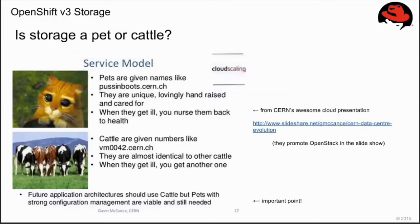Is something as unique and as important as your data the pet or cattle? This is a slide from a presentation out of CERN, where they're using cloud platforms to manage and crunch all the data coming out of the Large Hadron Collider. The last bullet suggests a hybrid approach: we should aim for mostly cattle, but pets are warranted and needed at CERN, just as they will be needed in the data centers of Red Hat corporate customers and partners.